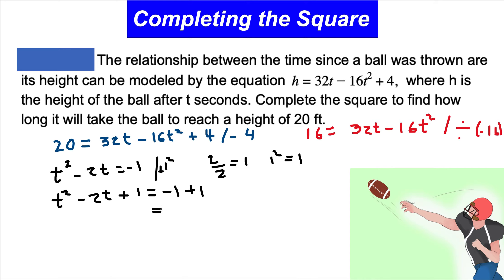The right side equals 0. On the left side, this is a perfect trinomial square. We can convert this into a binomial square, which is (t - 1)².